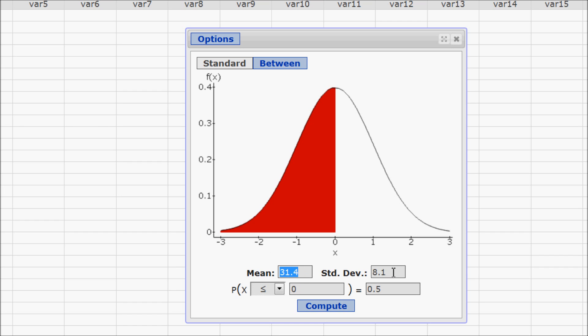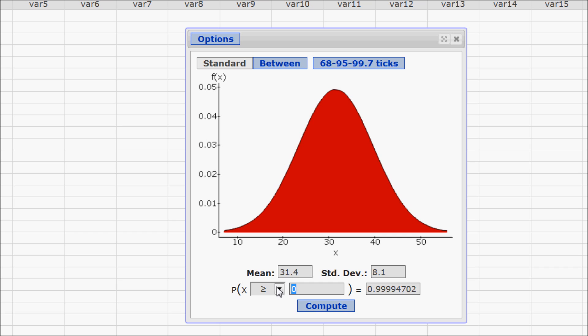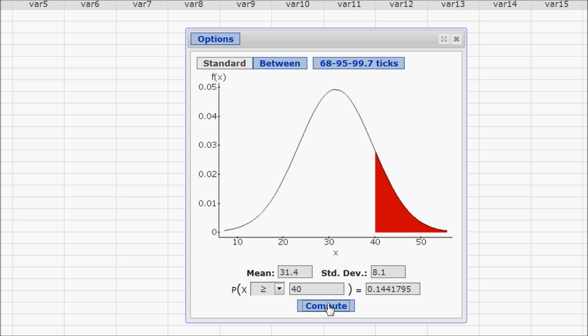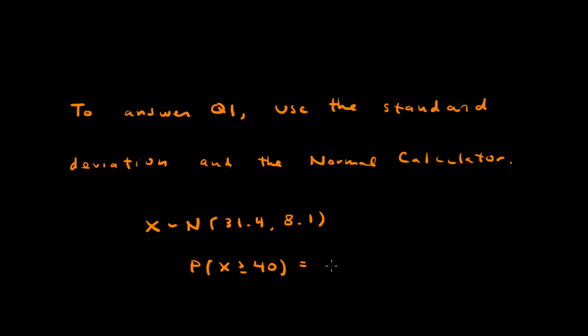So 31.4, 8.1. This changes to greater than and type in 40. So the probability is 0.144. So in a single game, the probability that Kevin Durant scores more than 40 points would be 0.144.